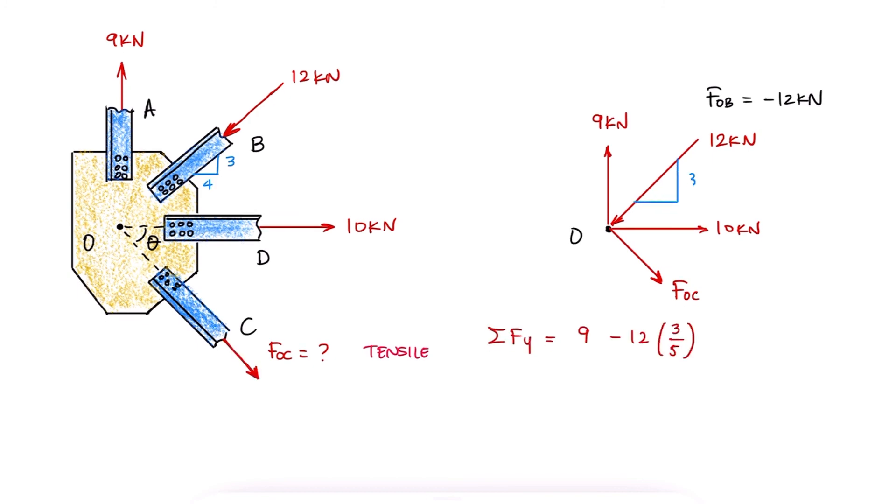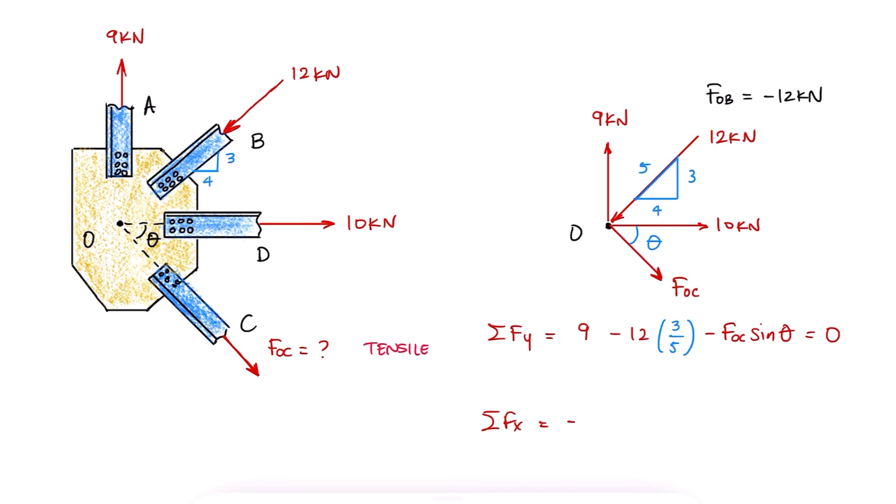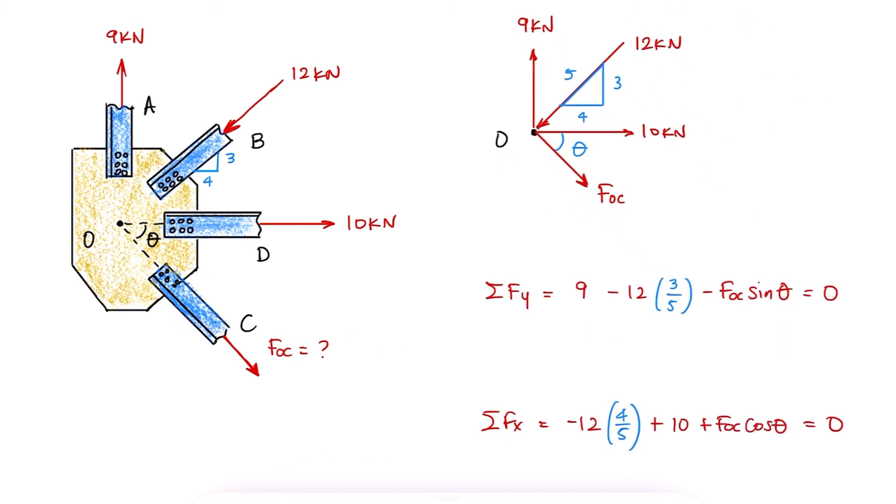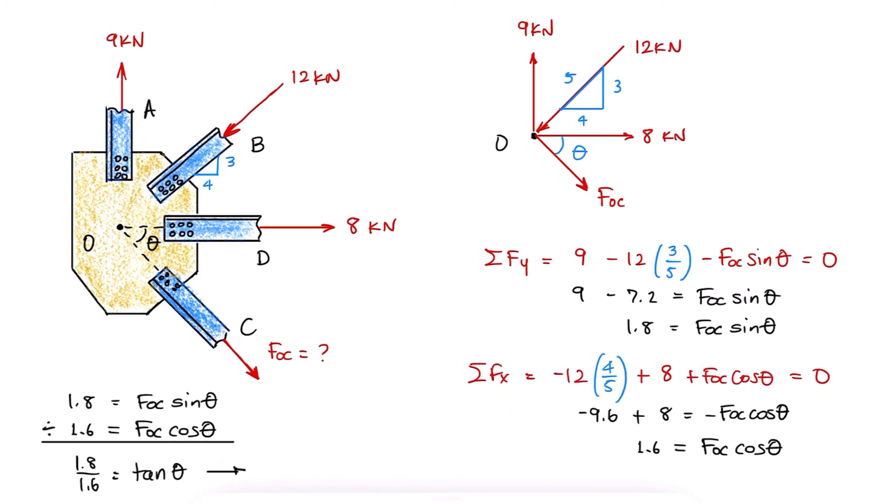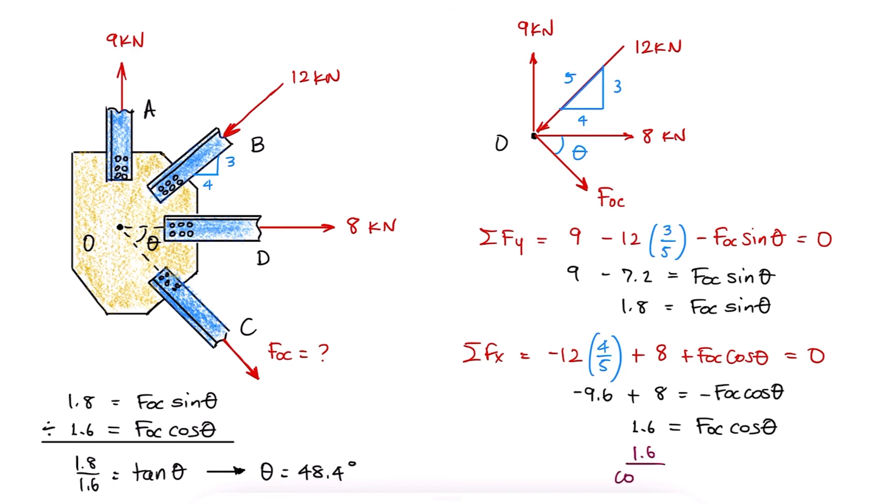Writing our sum of forces in the y and x-axis, and notice that we don't need to use slanted frames of reference here, we find two equations with variables theta and FOC. Dividing the equations we solve for theta, and substituting theta in any of them, we find FOC, which in fact yields a positive value.